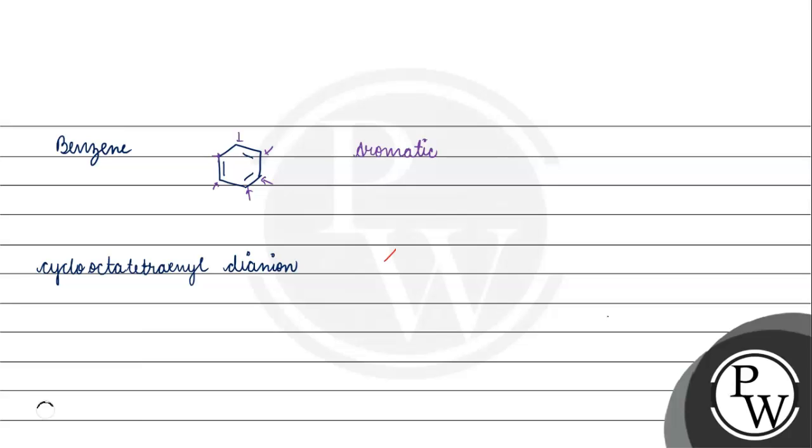basically something like this. How many pi electrons are there? It has 10 pi electrons. So, this also satisfies our aromatic nature. Each atom is sp2 hybridized.